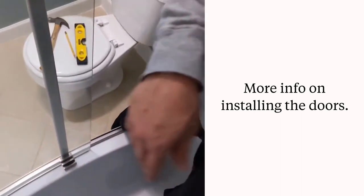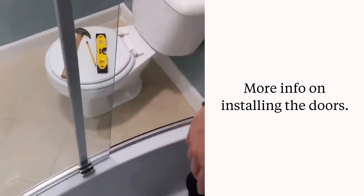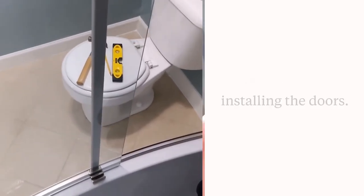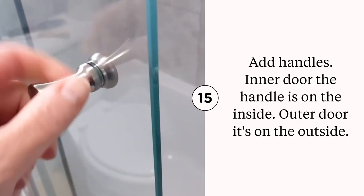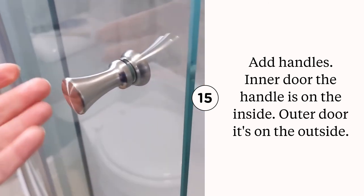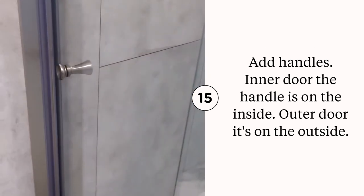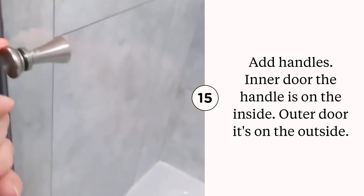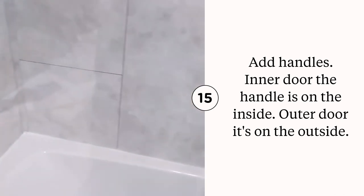These handles just screw right on. Keep in mind that your outer door handle is on the outside and your inner door handle is on the inside. That keeps them from hitting each other. They just slide right past each other; otherwise, you're going to have issues and break your glass.